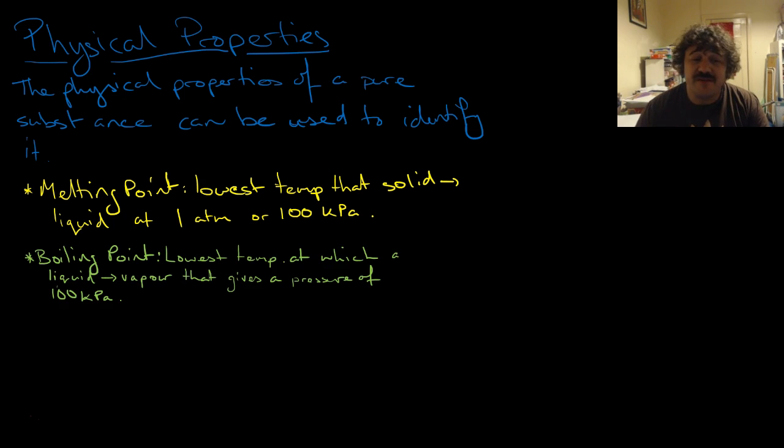The boiling point is the lowest temperature at which a liquid will then vaporize or turn into a vapor, giving, and this is important, 100 kilopascals of pressure. So if it was in a balloon, it would be pushing out 100 kilopascals.